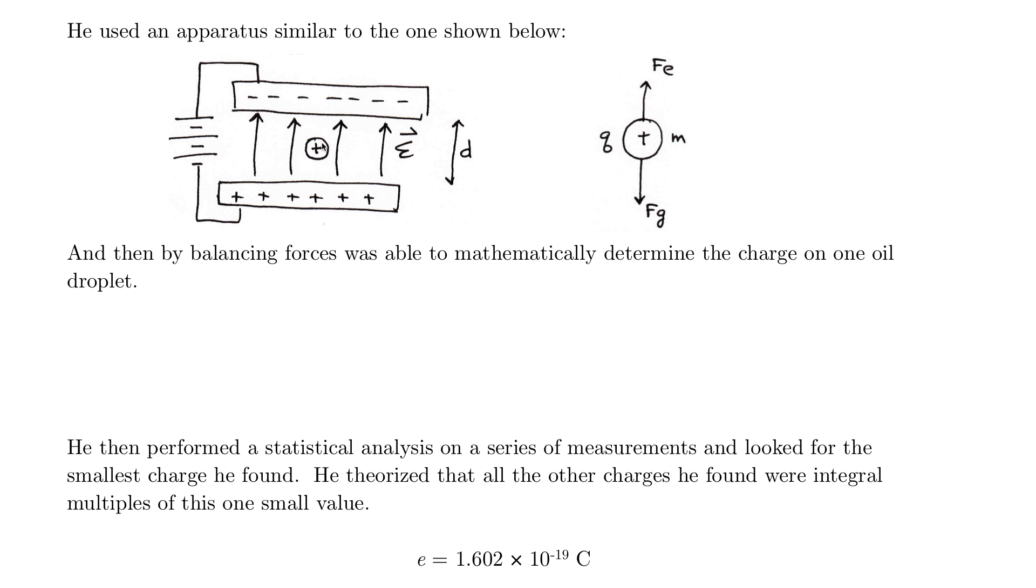If he really souped up the electric field, so he put more potential difference, then the electric force would overpower the gravitational force and it would go upwards. If he lowered it, then the gravitational force would take over and it would go downwards.